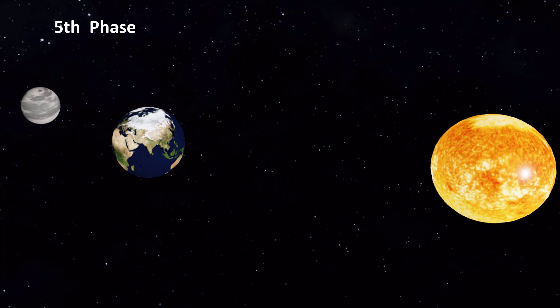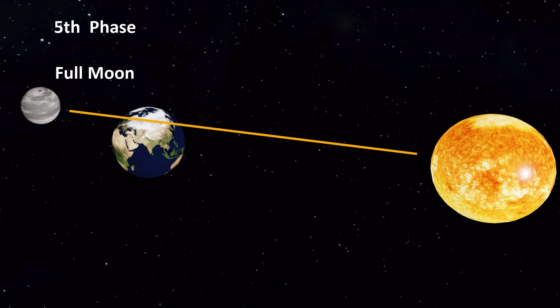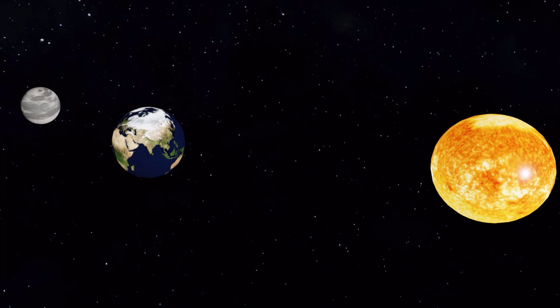The fifth phase of the moon is the full moon. This is when the moon is on the opposite side of the earth from the sun, and its illuminated side is facing towards us. This means that from our perspective, the moon appears to be completely illuminated and round.